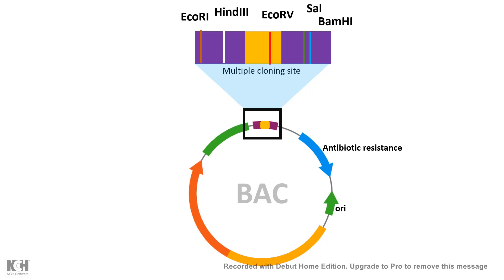For proper replication and segregation of the plasmid, there is an origin of replication site. There is also an F-plasmid PAR gene. This PAR gene — known as the partition gene — is specifically important for segregation of the bacterial artificial chromosome.